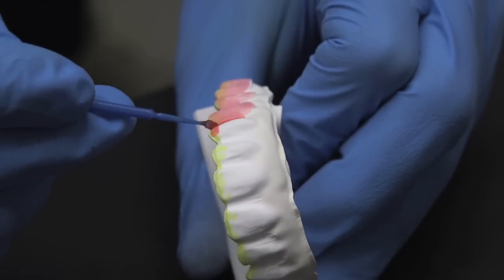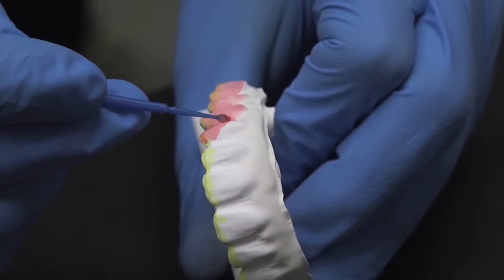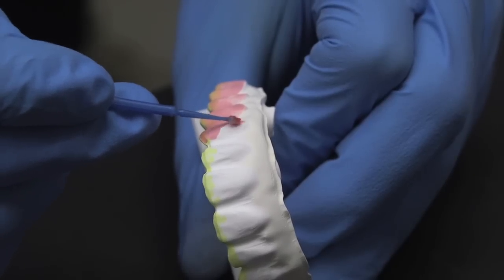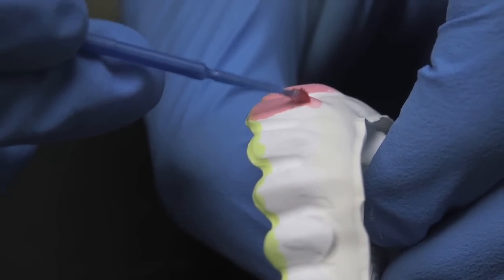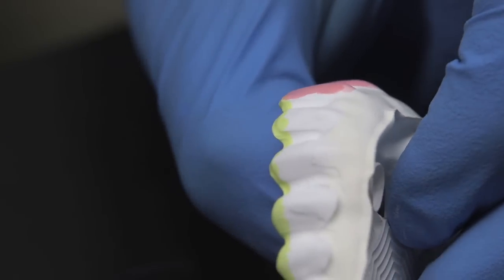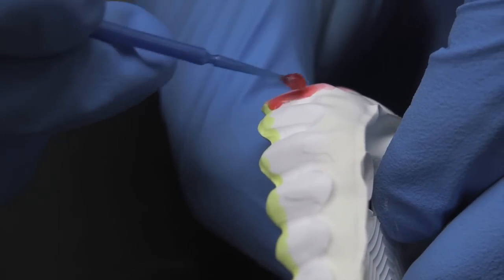Next, it is time to apply the Denton shading liquid to complete the shading process. During application, take care not to paint the tissue portion of the bridge. Once all areas of the bridge have been treated, the bridge is ready for sintering.